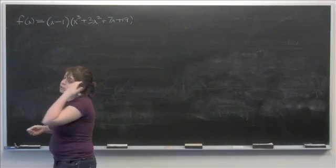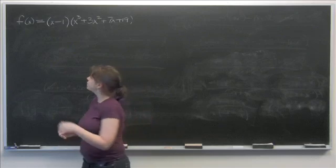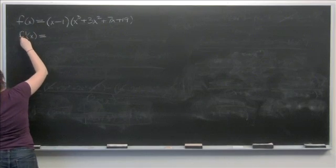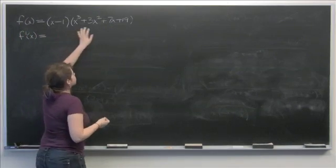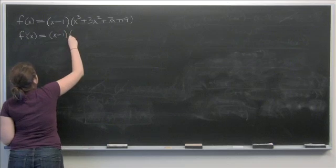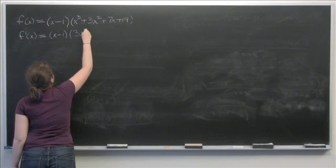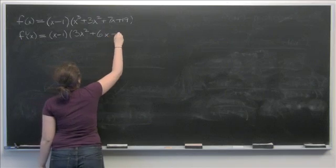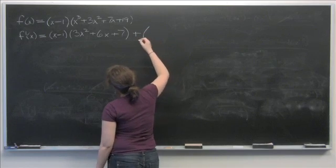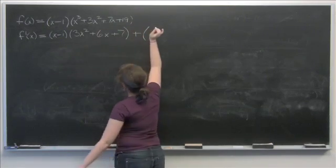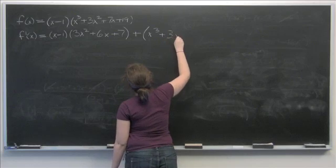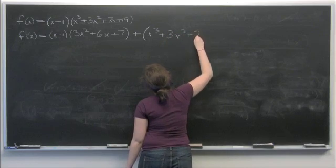First things first, take the derivative and set it equal to 0. Taking our first derivative using the product rule — first times the derivative of the second, plus second times the derivative of the first — we get (x - 1)(3x² + 6x + 7) plus 1 times (x³ + 3x² + 7x + 19).